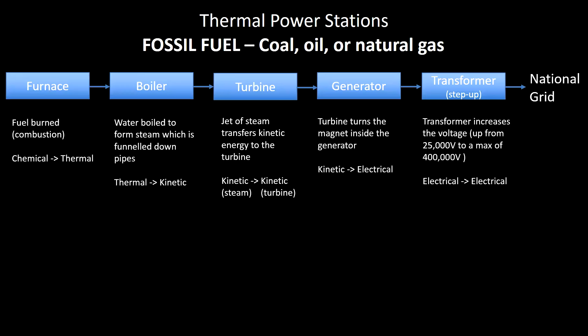A couple of points to note: sometimes the furnace and the boiler might be combined, and sometimes the transformer might not be included, so just look at the block diagram and make sure you are clear on which things are required of you. They sometimes put a little rotating arrow between the turbine and the generator to show that they are linked together and one is rotating the other.